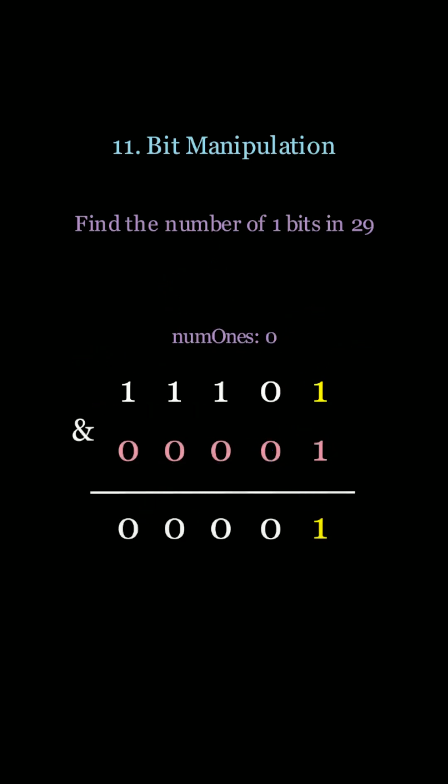The trick to get the least significant bit for any number is to AND the number with 1. If the ANDed result is 1, then we increment our answer and then we shift the input number.